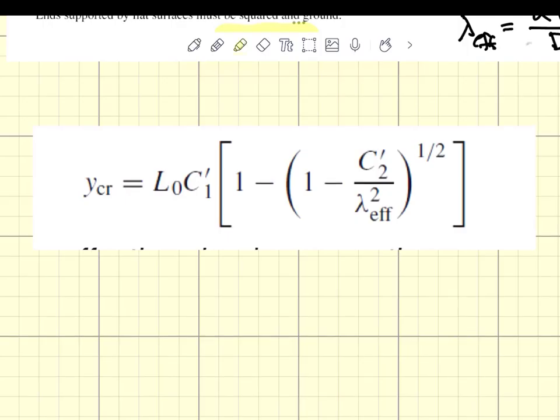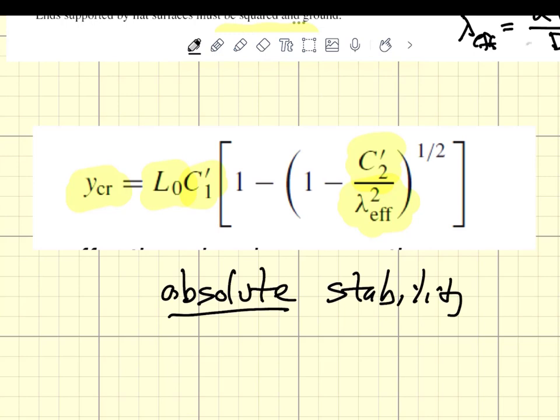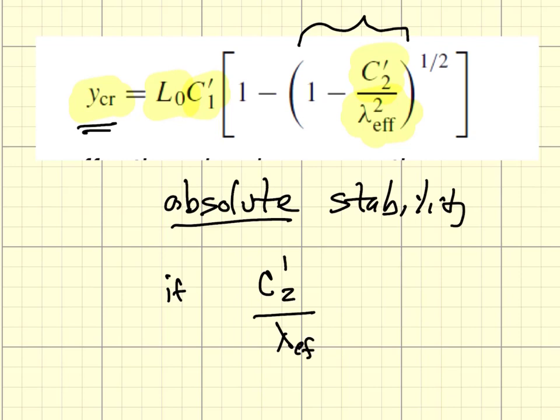Now that we have this equation for the critical buckling displacement based on these elastic coefficients and the effective slenderness ratio, we can ask what is the condition for absolute stability? If you look at this carefully, if this second term becomes negative, then the square root of a negative number is complex and not defined as a real number. That means we have absolute stability if C2-prime over the square of the effective slenderness ratio is greater than 1.